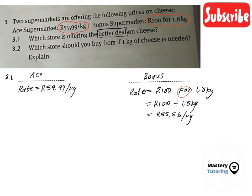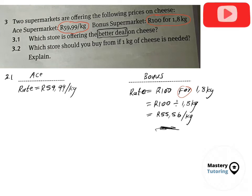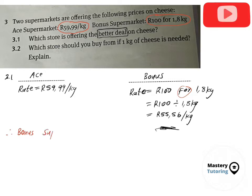100 divided by 1.8 equals R55.56 per kg — because we divided by a kilogram quantity. Now our rates are in the same units: rands per kg for both stores. Comparing the two, R55.56 is clearly lower than R59.99, so Bonus supermarket is the cheaper store and offers the better deal.